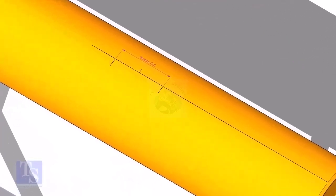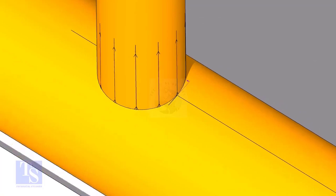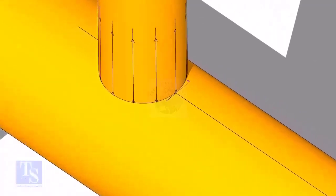Mark the branch OD on the center line of the header. Put the branch exactly on this marking, matching the branch center line.